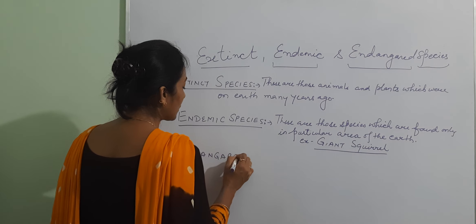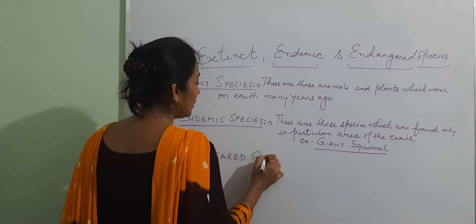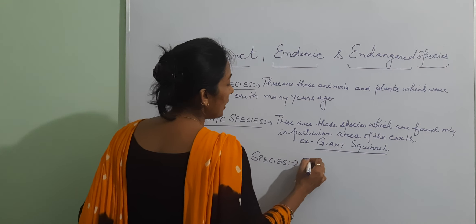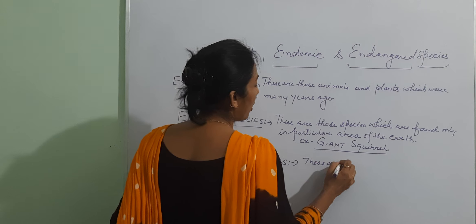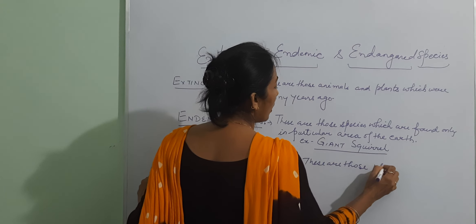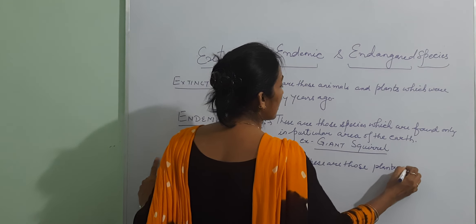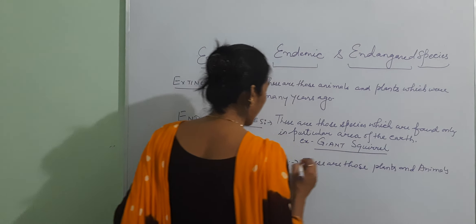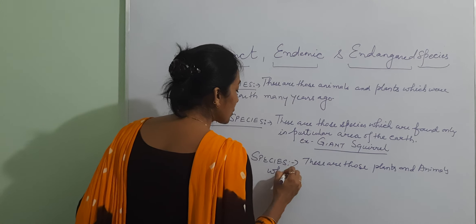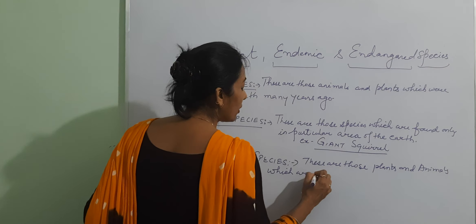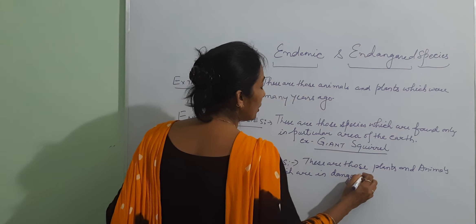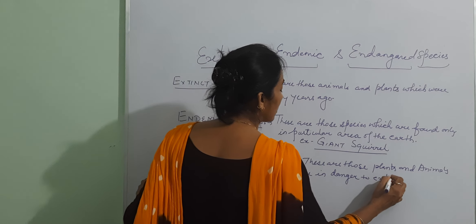Endangered species — these are those plants and animals which are in danger of becoming extinct.